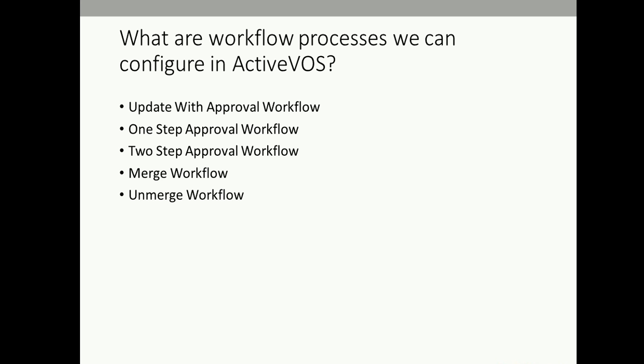The very first question is: what are the workflow processes we can configure in ActiveVOS? ActiveVOS can be configured for the following workflow processes: first is Update with Approval workflow, second is One Step Approval workflow, next Two Step Approval workflow, then we have the Merge workflow, and finally the Unmerge workflow. These are the predefined processes in ActiveVOS. These workflows can also be configured in the legacy BPM engine.